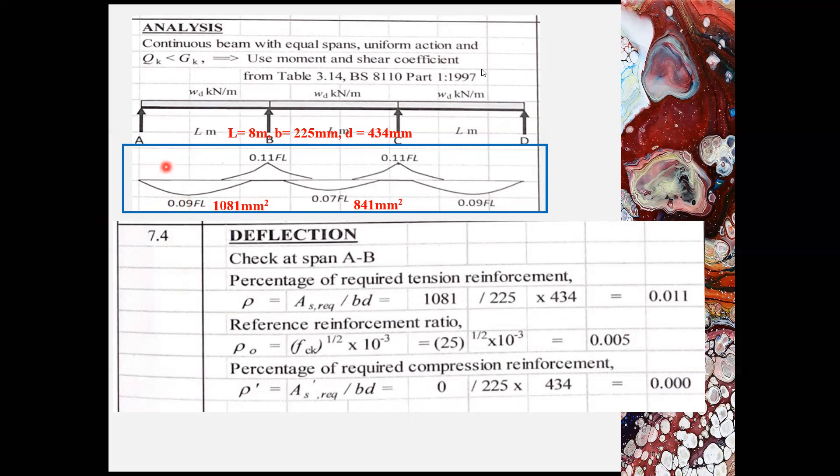Here are the basic information for the beam. The length is 8 meter, the width of the beam is 225 mm, and the effective depth is 434 mm.